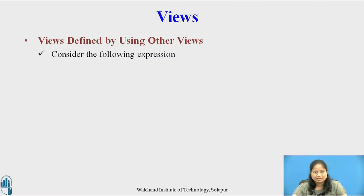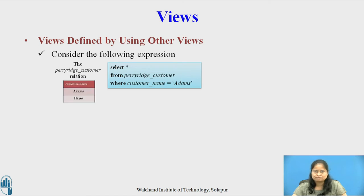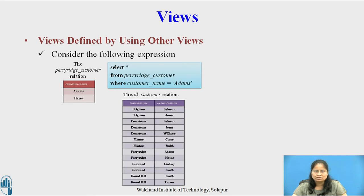Consider the following expression: SELECT * FROM perirage_customer WHERE customer_name = 'Adams'. The input relation to this expression is the perirage_customer relation, which is obtained using the all_customer relation. The resulting table contains the customer name Adams.